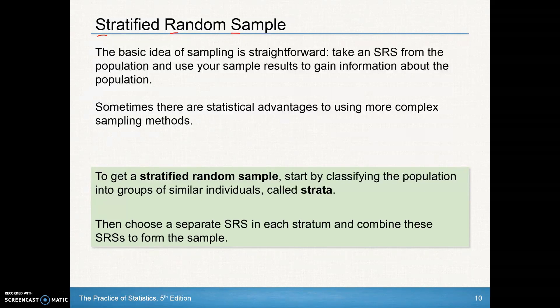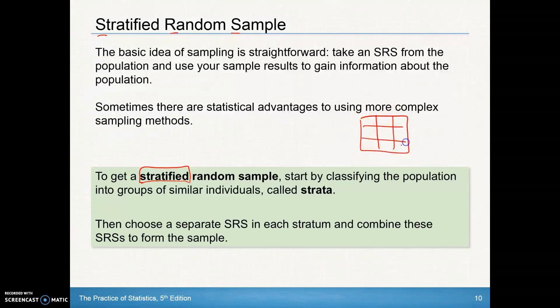What is a stratified random sample? A lot of times we'll just call it stratified, to keep it from being confused with SRS. What we do is start by classifying the population into groups — so we break the population into different groups, maybe nine different groups. Each of those groups is called a stratum.